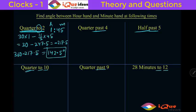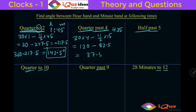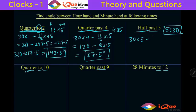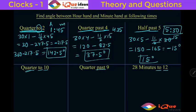Quarter past 4 means 15 minutes after 4 = 4:15. Angle: 30 times 4 minus (11/2) times 15 = 120 minus 82.5 = 37.5 degrees. Half past 5 means 30 minutes after 5 = 5:30. Angle: 30 times 5 minus (11/2) times 30. Two cancels with 30 giving 15, so 150 minus 165 = minus 15. The final answer is 15 degrees — the angle between the minute hand and hour hand at 5:30 is 15 degrees.